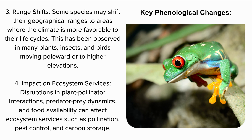4. Impact on Ecosystem Services: Disruptions in plant-pollinator interactions, predator-prey dynamics, and food availability can affect ecosystem services such as pollination, pest control, and carbon storage.